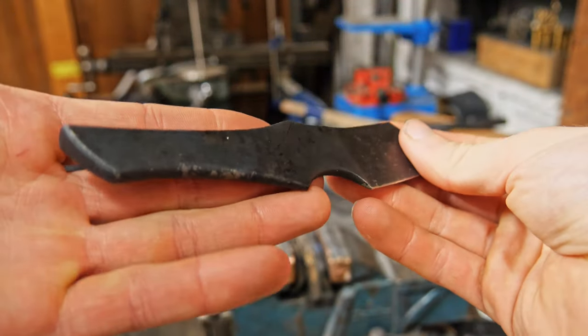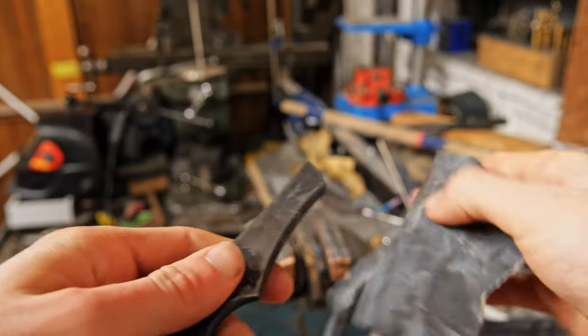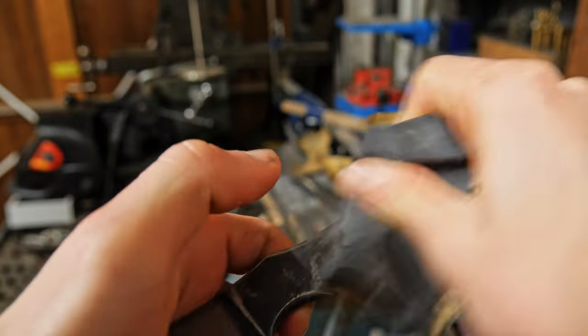This is the new hardened blade after the heat treatment and I'm very pleased with how clean it's looking. There's very minimal oxide scaling and that's all down to my new heat treatment oven performing really well.